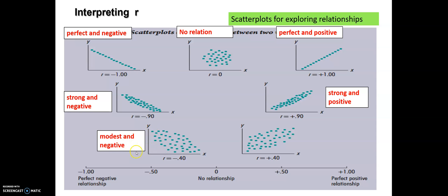In this example, we have a modest and negative relationship, because our R value — the correlation coefficient — equals minus 0.4. So there is a medium relationship but in a negative direction between x and y. And in the last case, we have a modest but positive relationship, which means my correlation coefficient equals plus 0.4. Those are the kinds of relationships or associations between all these examples.